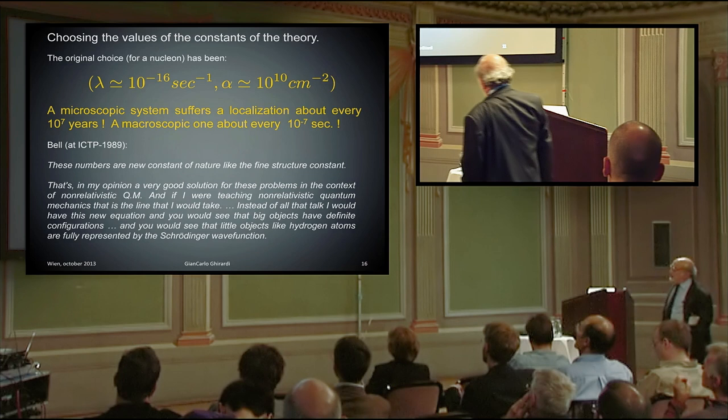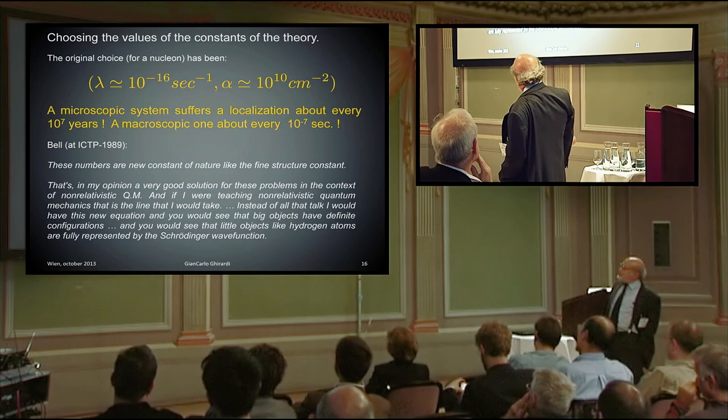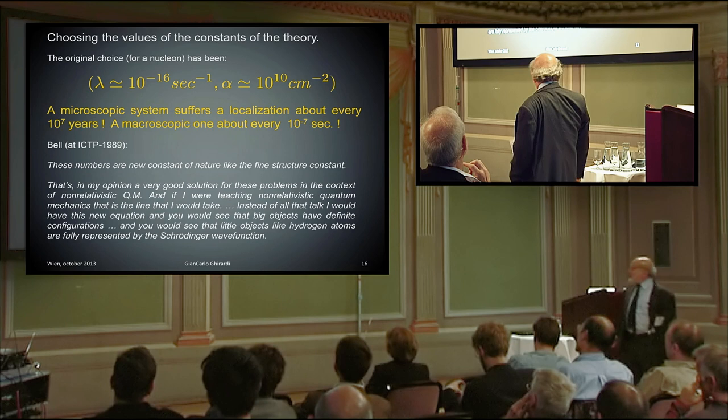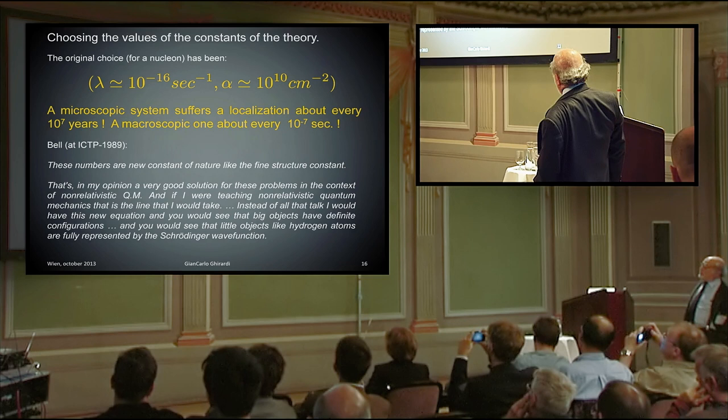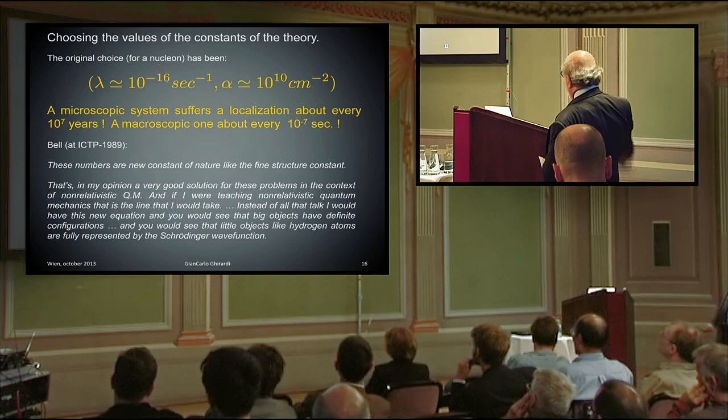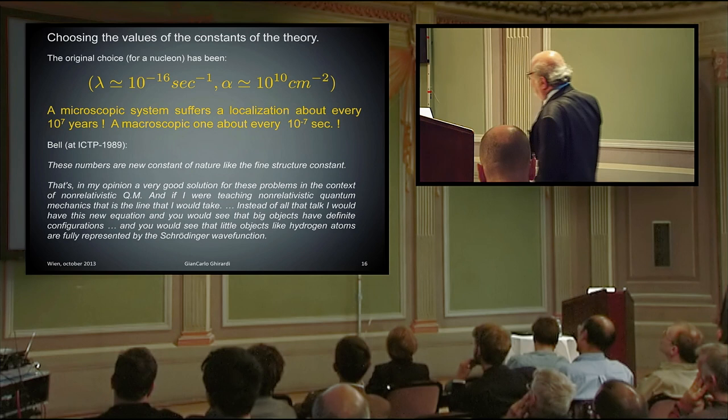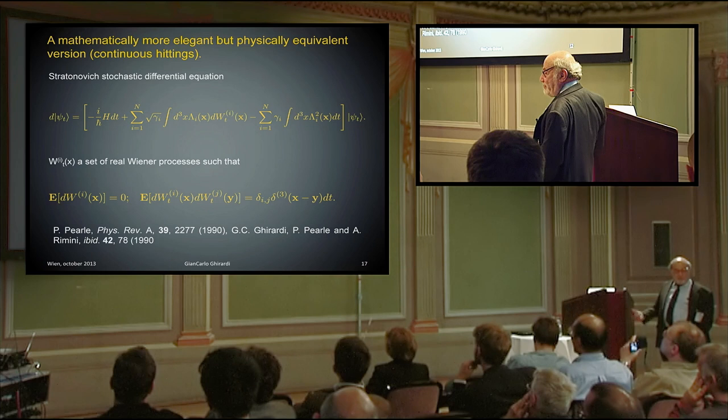Bell at ICTP in 1989, this is the last talk of Bell, has written this number. I don't share this. I consider this as a phenomenological model, which is interesting to consider, but he has said these numbers are new constants of nature like the fine structure constant. That's, in my opinion, a very good solution for this problem in the context of non-relativistic quantum mechanics. And if I were teaching non-relativistic quantum mechanics, that is the line that I would take. Instead of all that talk reduction, this is micro, this is macro, I would have this new equation, and you would see that big objects have definite configurations, and you would see that little objects like hydrogen atoms are fully represented by the Schrodinger wave function.